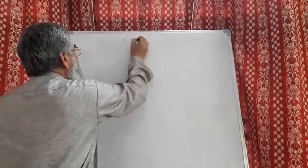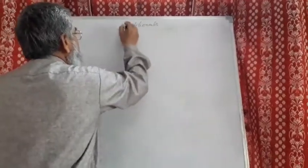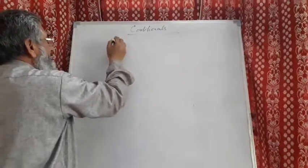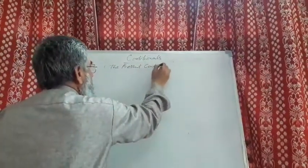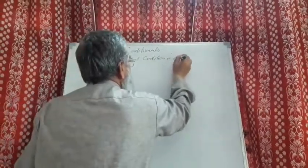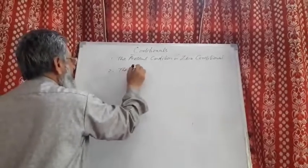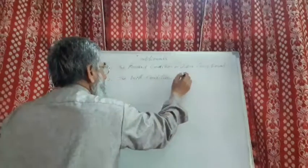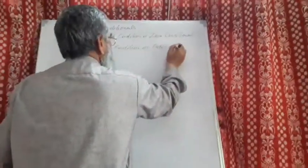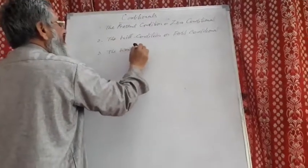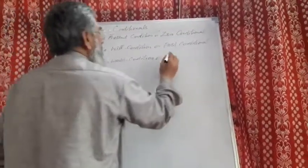The students are talking — conditionals is in progress. So far we have learned what conditionals are and what the types of conditionals are. You have learned that we have four types: number one, the present condition or zero conditional; number two, the will condition or first conditional; and number three, the would condition or second conditional.